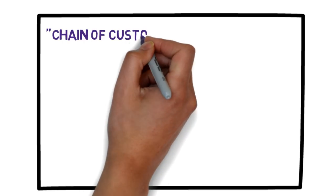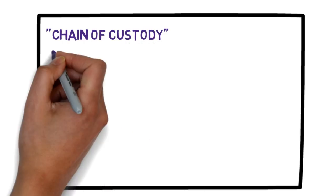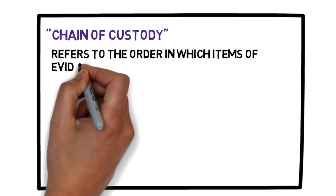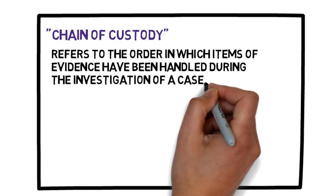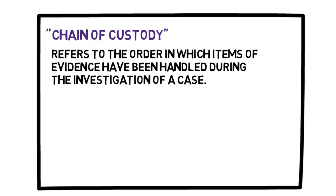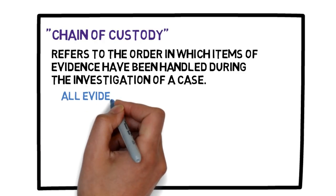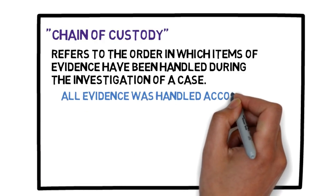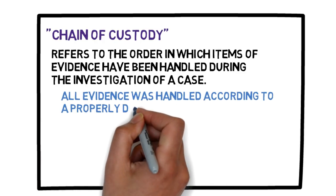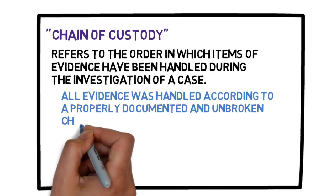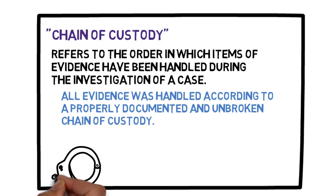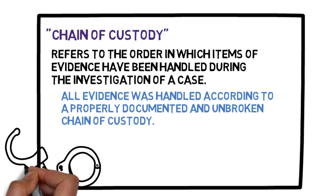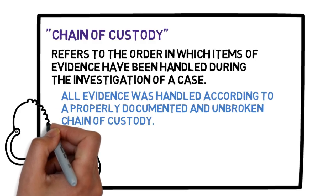The term chain of custody refers to the order in which items of evidence have been handled during the investigation of a case. In criminal trials, the prosecution must typically prove that all evidence was handled according to a properly documented and unbroken chain of custody.